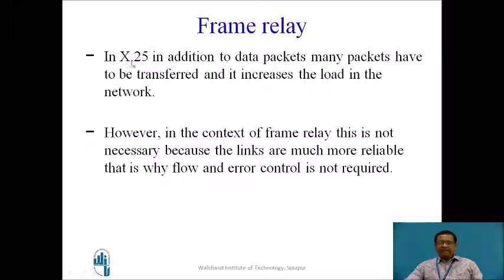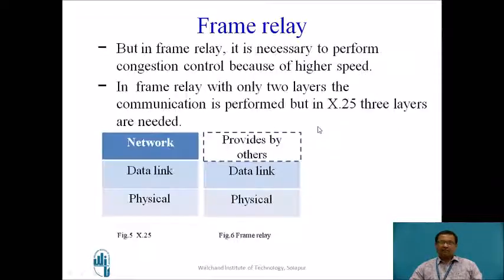Another feature is that in X.25, in addition to data packets, many control packets have to be transferred, increasing the load on the network. But in Frame Relay, there is no necessity of transferring other packets because the links are more reliable, and that is why flow and error control is not required in Frame Relay. However, because of the higher speed in Frame Relay, congestion may occur, and that is why it is necessary to perform congestion control in Frame Relay.